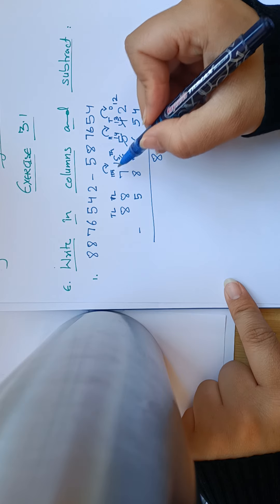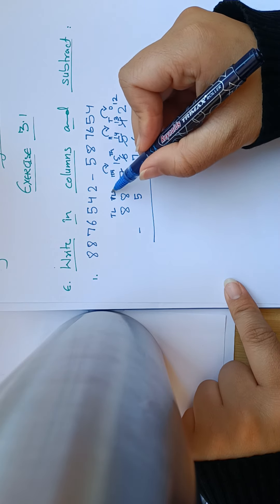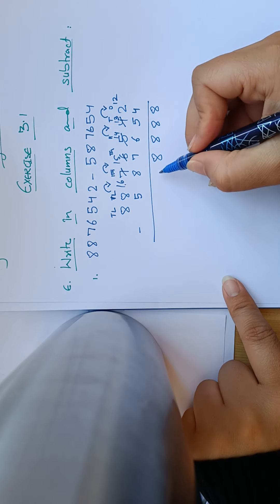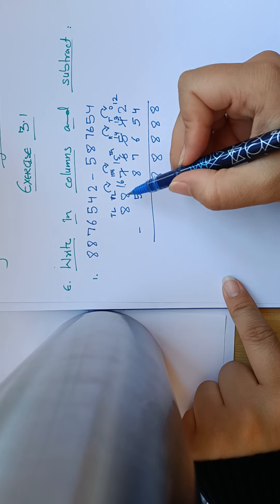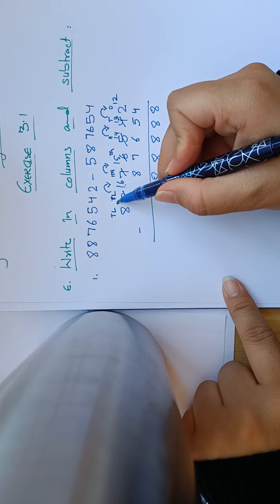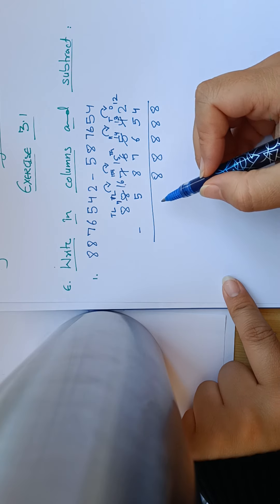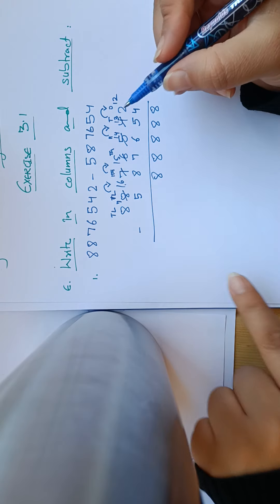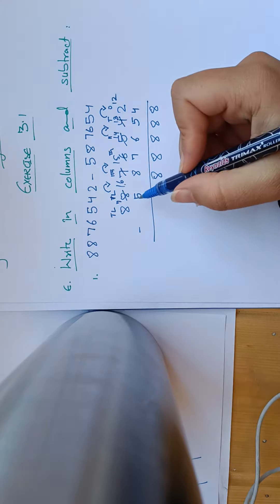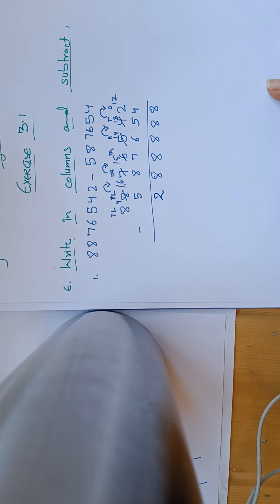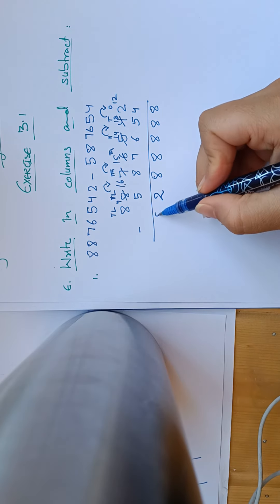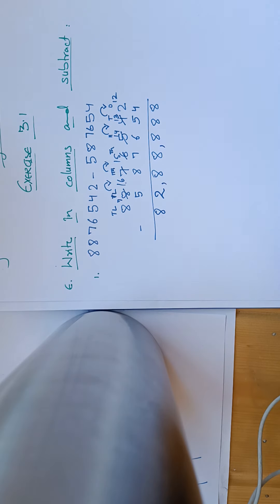इसको एक दिया, पीछे बचा 5। 5 में से 7 नहीं निकल सकता, ten thousand के place पे जाएंगे, वहाँ से एक borrow करेंगे, जो बनेगा 15। 15 में से 7 निकालेंगे — that's also 8। फिर lakh से एक number लाएंगे, जो बनेगा 16। 16 से 8 minus करेंगे — फिर से 8। 7 में से 5 easily minus हो सकता है, ten lakh का number as it is नीचे आएगा। Answer: 82,88,888।